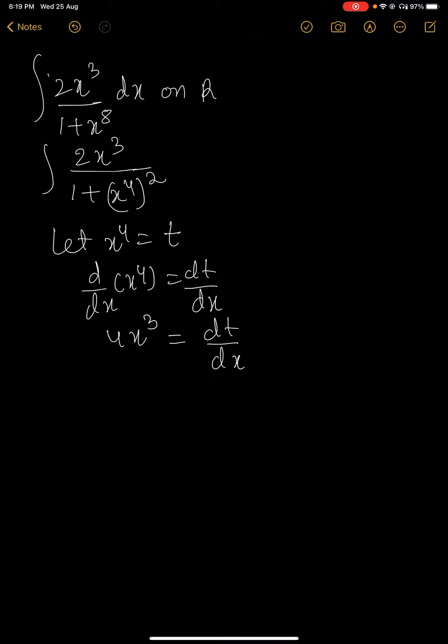Here, we have 2x³ dx in the numerator. So this can be written as 2 times 2x³ equals dt by dx. Therefore, 2x³ dx equals dt by 2.